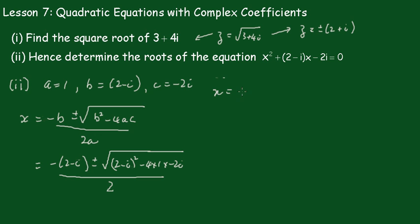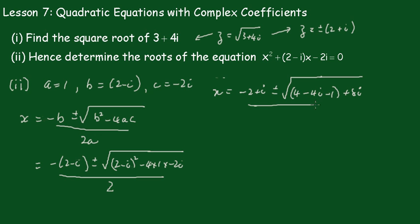Rearranging, this becomes minus 2 plus i plus or minus the square root of: expanding (2 minus i) squared gives 4 minus 4i, and squaring the i term gives minus 1. Adding the minus 4ac term of plus 8i, all over 2. This becomes minus 4i plus 8i equals 4i, so the expression under the root becomes 3 plus 4i.